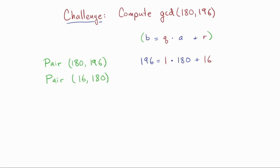Remember that the key here is that the GCD of the first pair, 196 and 180, is the same as the GCD of the new pair, 180 and 16. So solving the smaller problem actually solves the original one.